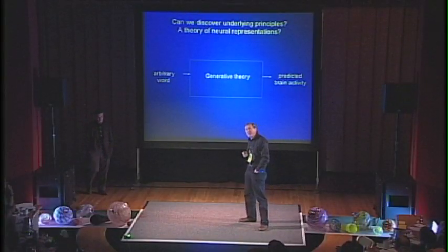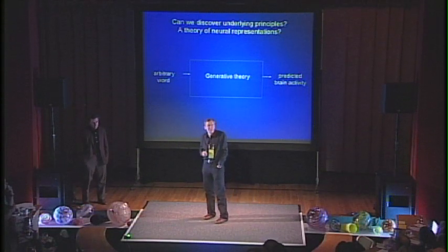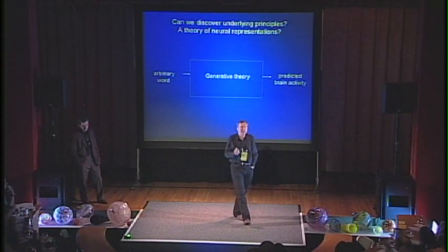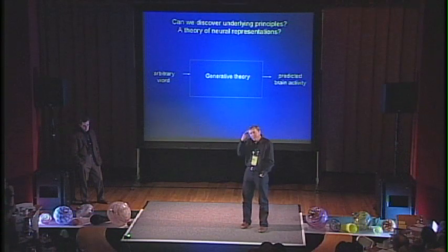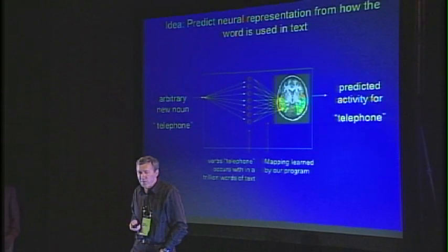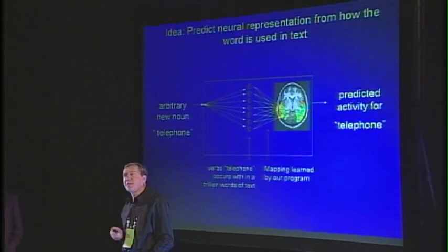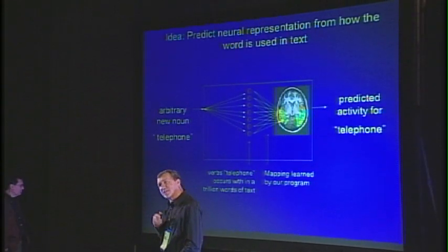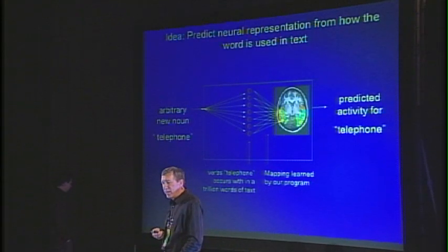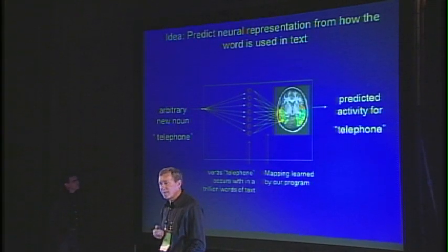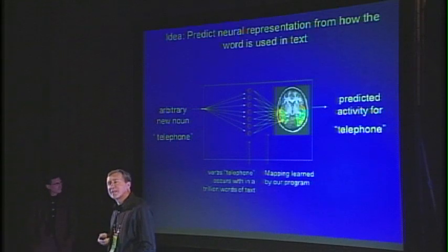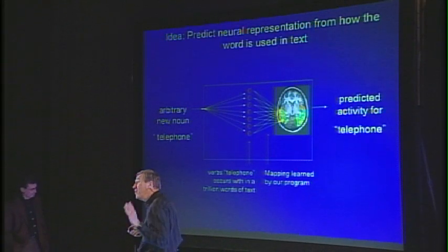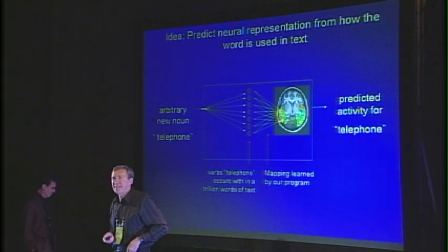One thing theories do is they make predictions. One kind of prediction I'd like a theory to make about neural representations is: let's try to build a theory that would predict the representation for any word. We came up with a computational model — a computer program — where you can give it a new word like telephone, and it will make a prediction for what the neural activity looks like for telephone, even if you have not collected that data before.